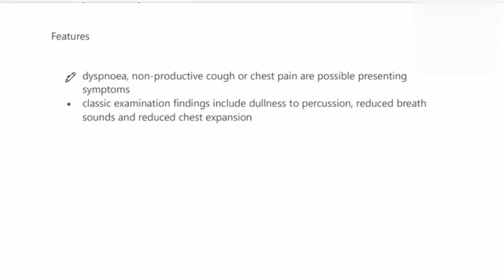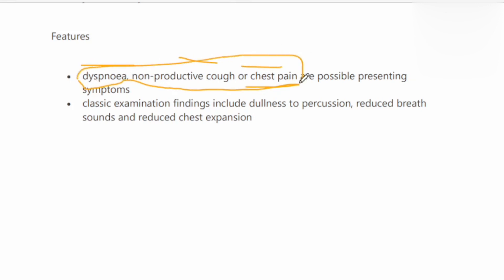What are the features of pleural effusion? The patient has symptoms of dyspnea, non-productive cough, and chest pain. These are due to irritation of the pleura. Dyspnea occurs because the lungs cannot expand due to the pressure effect, causing shortness of breath.